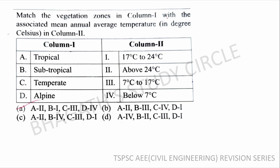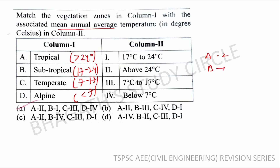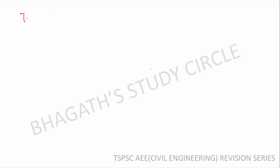Next question: Match the vegetation in Column 1 with the associated mean annual average temperature. Tropical evergreen forests have the highest temperature range; subtropical forests have temperature of 7 to 24 degrees. Option with order 2-1-4-3 is the correct answer.